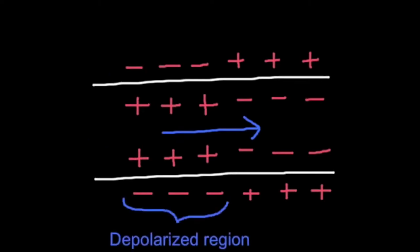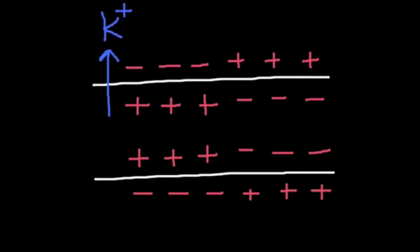This is known as depolarisation. After depolarisation, potassium ions use the potassium channels to move outside of the axon also by facilitated diffusion.